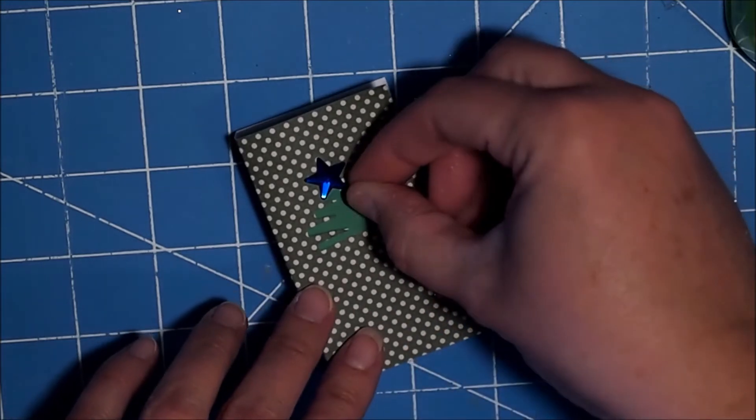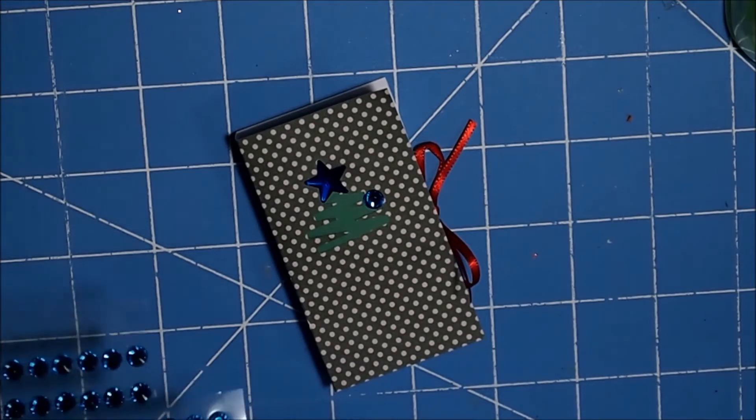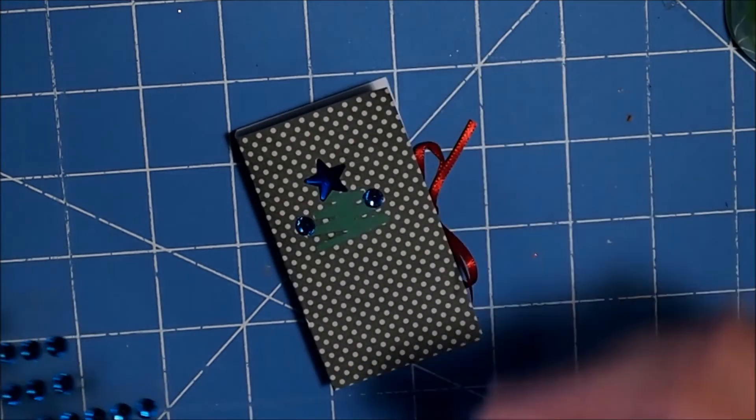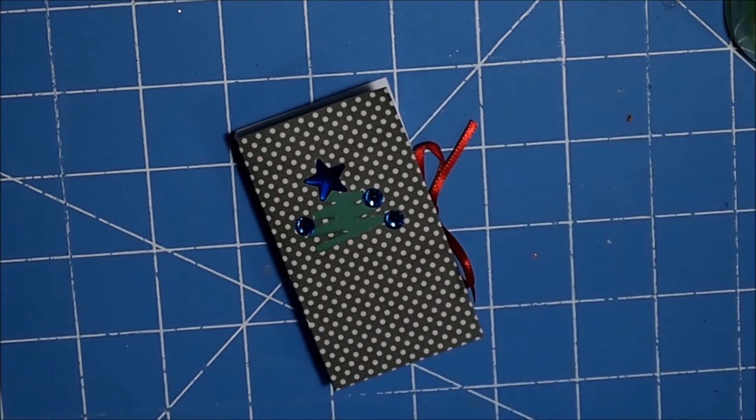Then I'm just using just a few little rhinestones just to kind of give it a little bit of decoration. I didn't have anything really smaller than this, so I'm just using a few of them so it looks kind of like the bulbs or balls on a tree.